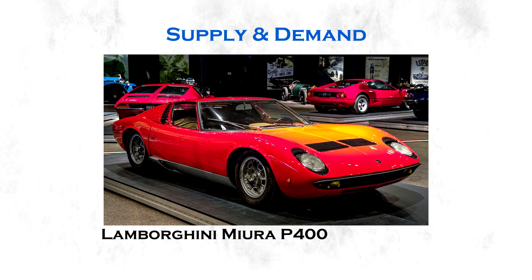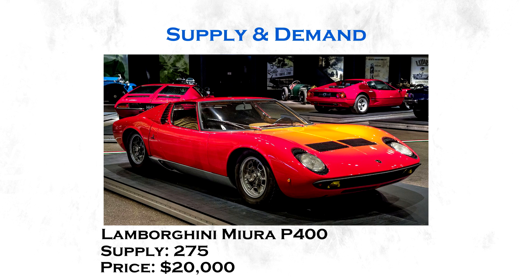Let me give you an example of supply and demand for a classic car like the Lamborghini Miura. Exactly 275 of the model P400 were produced between 1966 and 1969 and the price was around 20,000 US dollars, which equals around 157,600 today. So the supply was only 275 cars worldwide. Over time this car gets rarer because some may not even exist anymore and not everybody wants to sell it, which means the supply is low and it is very hard to get one.